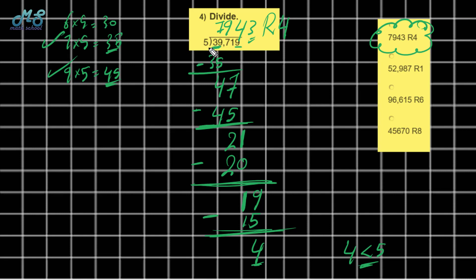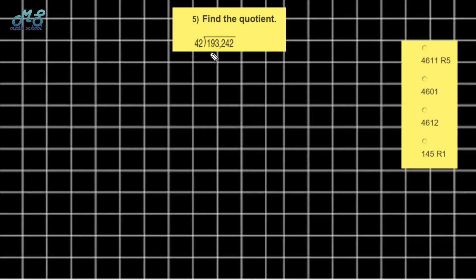You can also find the quotient and remainder using short division — try it yourself. Number 5: find the quotient of 193,242 divided by 42. It's a 6-digit number divided by a 2-digit number, so you must use long division. Take the first two digits: 19. Since 19 is less than 42, take the first three digits: 193. 193 divided by 42.